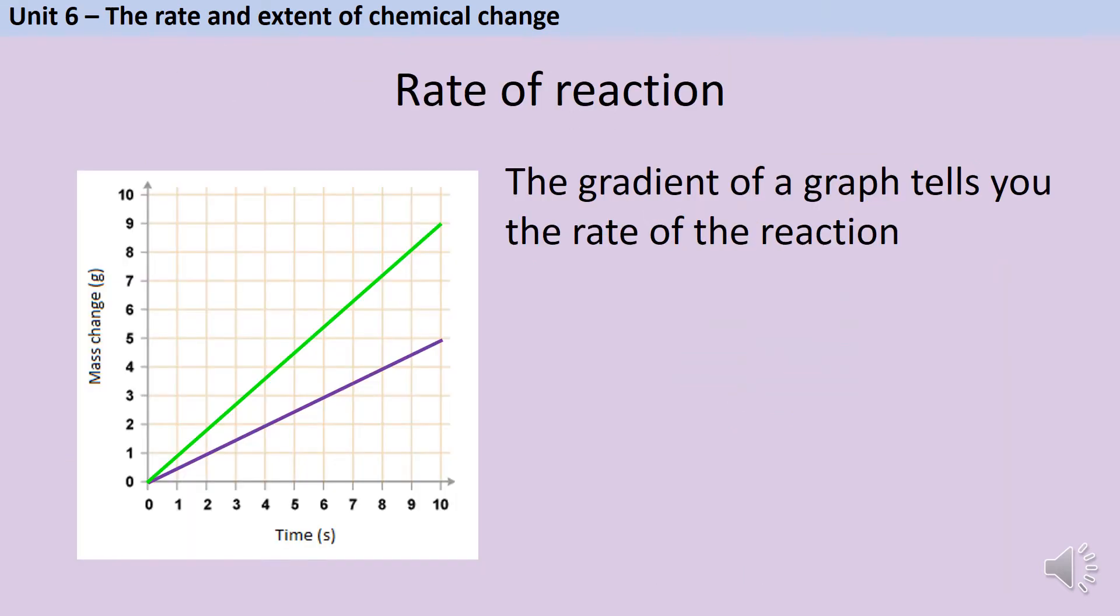You may also be asked to describe the rate of a reaction based on a graph. Firstly, on a qualitative level, the steeper a graph is, the faster the rate. So if these two lines represent two reactions, the green line represents a chemical reaction with a faster rate, and we can tell because it's steeper.